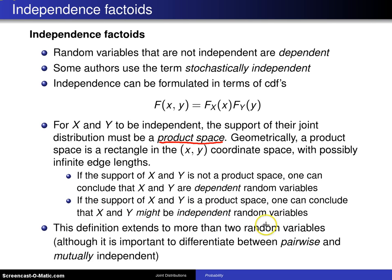The next thing you need to do is take a look at the joint distribution and see if it is the product of the marginal distributions, either using cumulative distribution functions or lowercase f of x y. This definition extends to more than two random variables, although it is important to differentiate between pairwise and mutually independent.